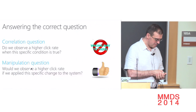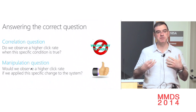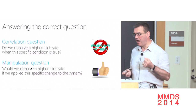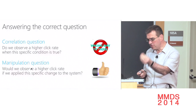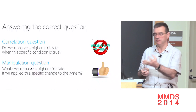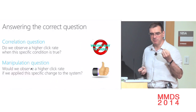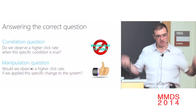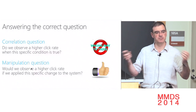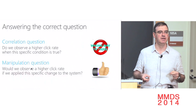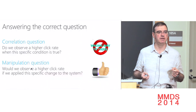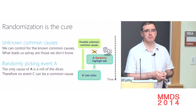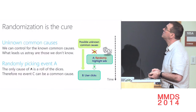Eventually I decided: the question being asked is wrong. You cannot say 'I have a correlation, can I do this?' — that question has no valid answer on the basis of the data alone. The question you want to answer is about manipulation: would we observe a higher click rate if we applied this specific change to the system? That means modeling the chain of causes and effects that are going to change the system in various ways, in the short term and the long term. One has to bite the bullet — there is no other way.